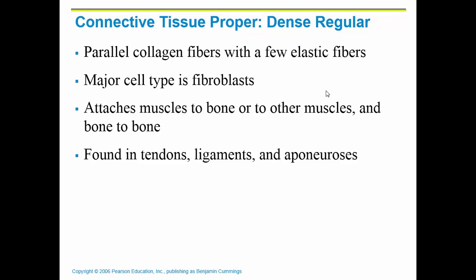Another connective tissue proper is called dense connective tissue. Dense connective tissue does not have a good blood supply, and anytime a tissue lacks a good blood supply, it cannot heal as well. Dense connective tissue is very strong — it has collagen fibers so it's strong, but very few elastic fibers so it doesn't stretch much. The major cell type is fibroblasts. Dense connective tissue makes up tendons and ligaments. Tendons connect muscle to bone; ligaments connect bone to bone. When you tear a ligament or tendon, it takes much longer to heal than a broken bone because bones have a good blood supply and tendons and ligaments do not.